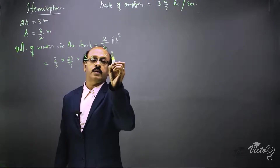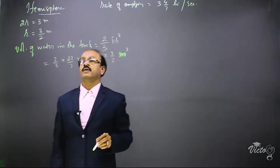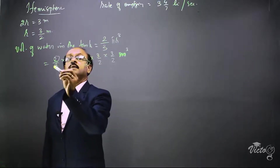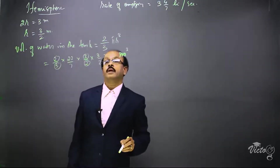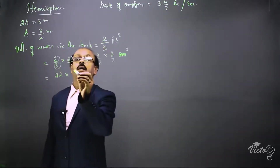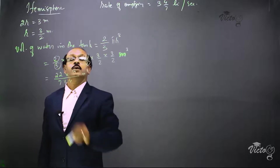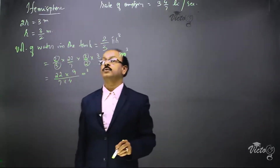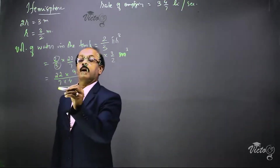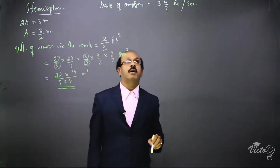r³ means 3 by 2 cubed, that is 3 by 2 into 3 by 2 into 3 by 2, in meter cube since the radius is given in meters. The 2 and 2 cancel, and 3 and 3 cancel. The remaining quantity is 22 into 3 into 3, which is 9, divided by 7 into 4. So the volume of water in the tank equals 22 into 9 divided by 7 into 4 meter cube.